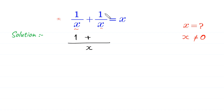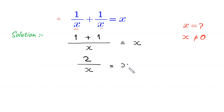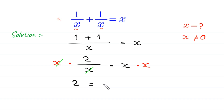1 plus 1 will become 2, divided by x, is equal to x. From here we multiply both sides of this equation by x. The x cancels with this x, and this equation will become 2 is equal to x squared. We can rewrite this equation as x squared is equal to 2.